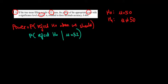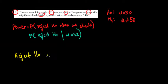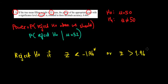In the previous video, we had the following hypothesis: we were testing whether the mean is equal to 50 grams. Now when do we reject that hypothesis? We would reject it if the z-value of the test is less than minus 1.96 (the critical value) or if z is greater than 1.96 (the critical value).